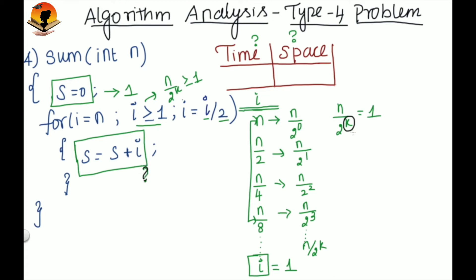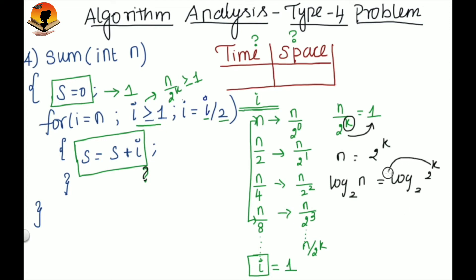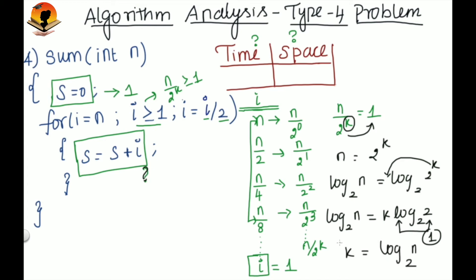Let's find out the k value. Take 2^k to the other side, then take log on both sides with base 2. So log n base 2 equals k times log 2 base 2. We know that the value of log 2 base 2 is 1, so k is equal to log n base 2.